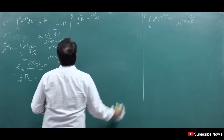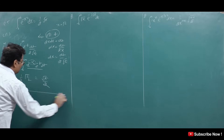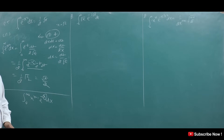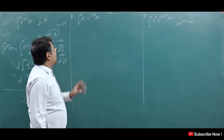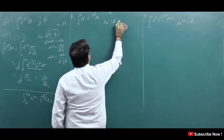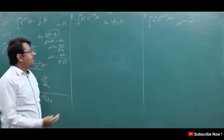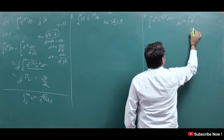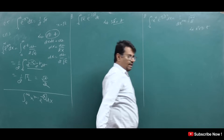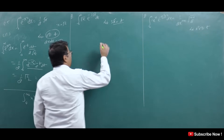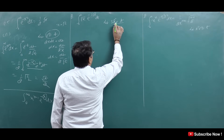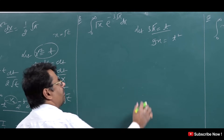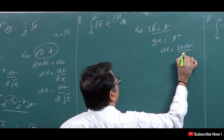Next question: the Gamma function formula requires x to appear with power 1. Here we have 3√x (cube root of x), which is causing a problem. So we let 3√x = t, or equivalently 9x = t², giving dx = 2t dt / 9. Then √x = t/3.